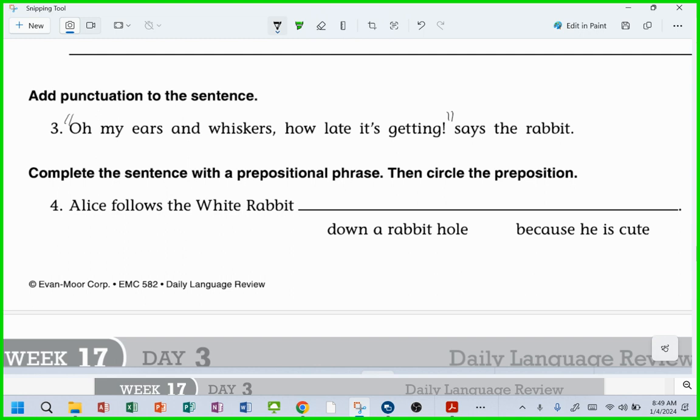Yes, down a rabbit hole is the prepositional phrase. Hey, who can tell me, who's really on top of things and can tell me what the actual preposition is in this phrase? So the phrase down a rabbit hole, okay, is the prepositional phrase. Which word is just the preposition? Hey, Michael, down. There you have it.